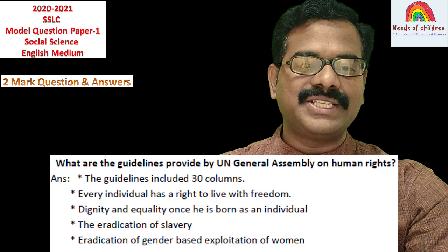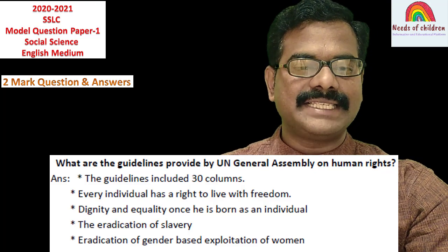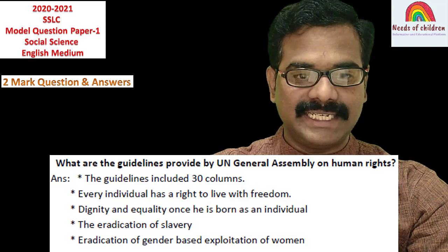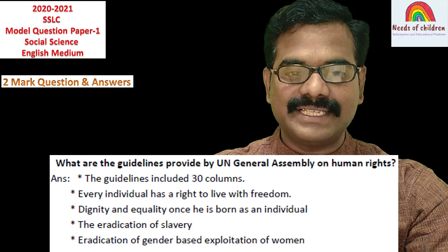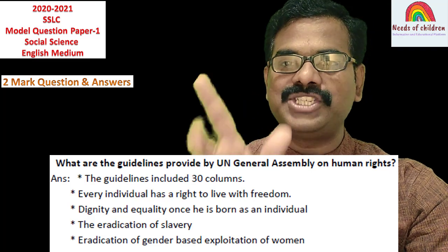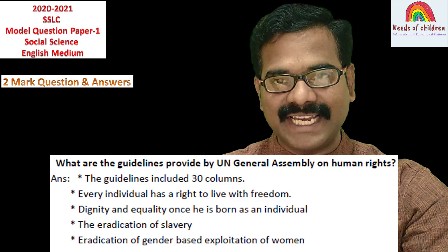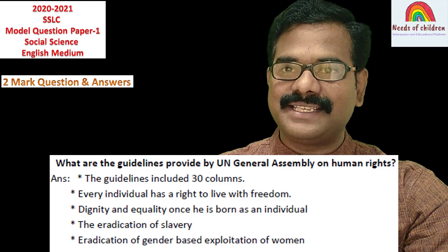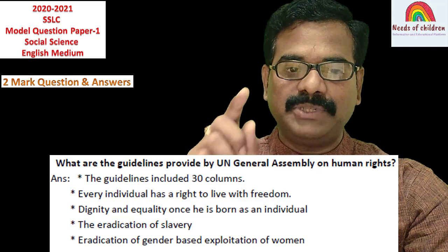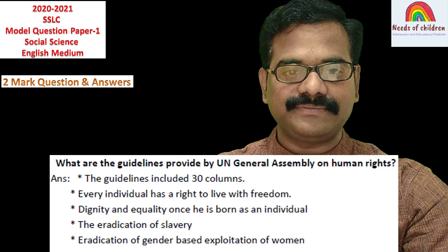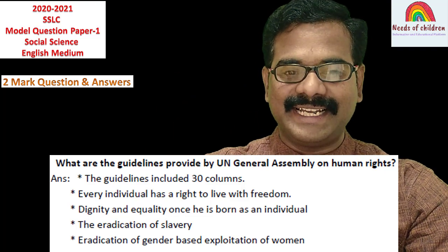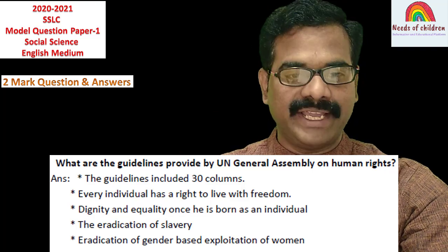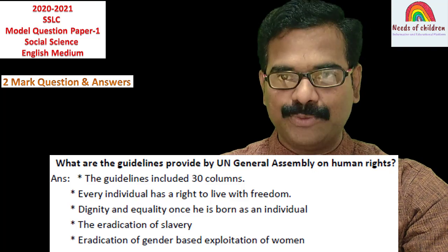The next question: What are the guidelines provided by the UN General Assembly on Human Rights? This question is from Political Science, Chapter Number 5 — International Institutions. You should give importance to both Chapter Number 3 and Chapter Number 5 for the two-marks section.